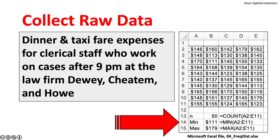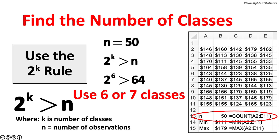The first step is to collect the raw data. Here are dinner and taxi fare expenditures for clerical staff who work on cases after 9 p.m. at the law firm of Dewey, Cheatham & Howell. The largest amount reported was $179; the lowest was $111. The next step is to determine the number of classes using the 2-to-the-k rule: 2 to the k power is greater than or equal to n, where k is the number of classes and n is the number of observations. With n equal to 50, we need at least six classes, because 2 to the sixth power is 64. We cannot use five categories because 2 to the fifth power is only 32, which is less than the 50 observed variables.